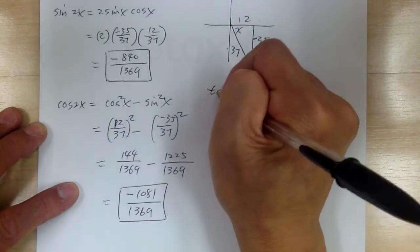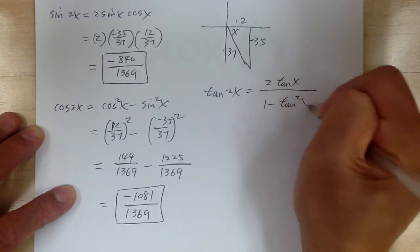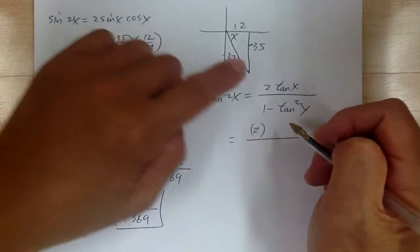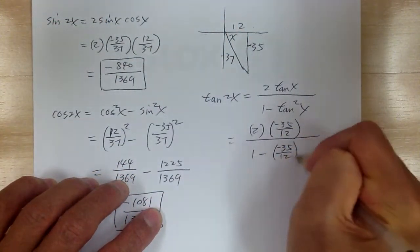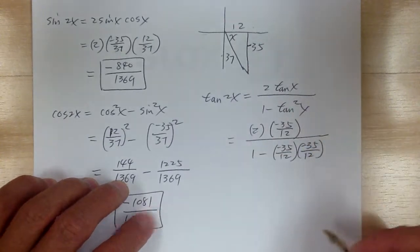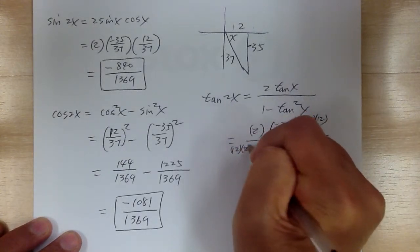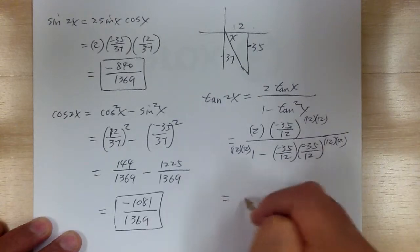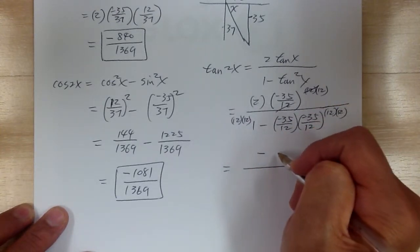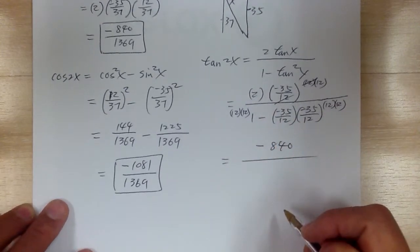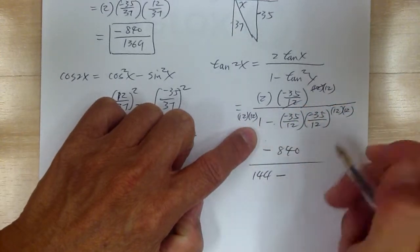Now let's do tangent 2x. Tangent 2x equals 2 tangent x over 1 minus tangent squared x. Tangent is sine over cosine, so it would be negative 35 over 12. Multiply by the common denominator 12 twice to clear the complex fraction. This cancels out and you get negative 840 on top. On the bottom, you have 144 minus negative 35 squared — the negatives give a minus — giving 144 minus 1225.